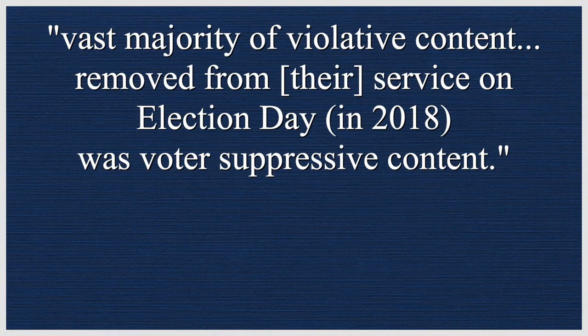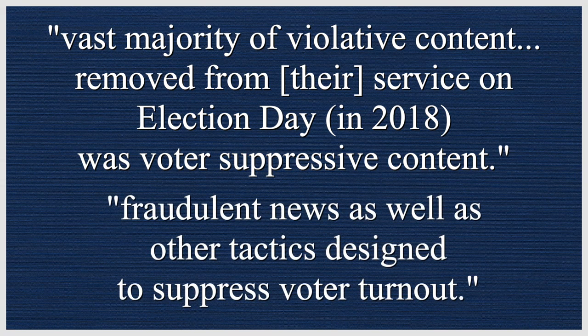Method five is spreading fraudulent election day information. Twitter reported that the vast majority of content removed from their service on election day in 2018 was voter suppressive content. Voter suppression is just what it sounds like — fraudulent news and other tactics designed to suppress voter turnout. There was even a commonly used hashtag on Twitter and Facebook with the wrong date: hashtag vote November 7th. You can read PEN America's report, 'Truth on the Ballot' — link below — for more examples of tweets aiming to dampen voter turnout, spread fear of non-existent voter fraud, and stoke distrust in the voting process.